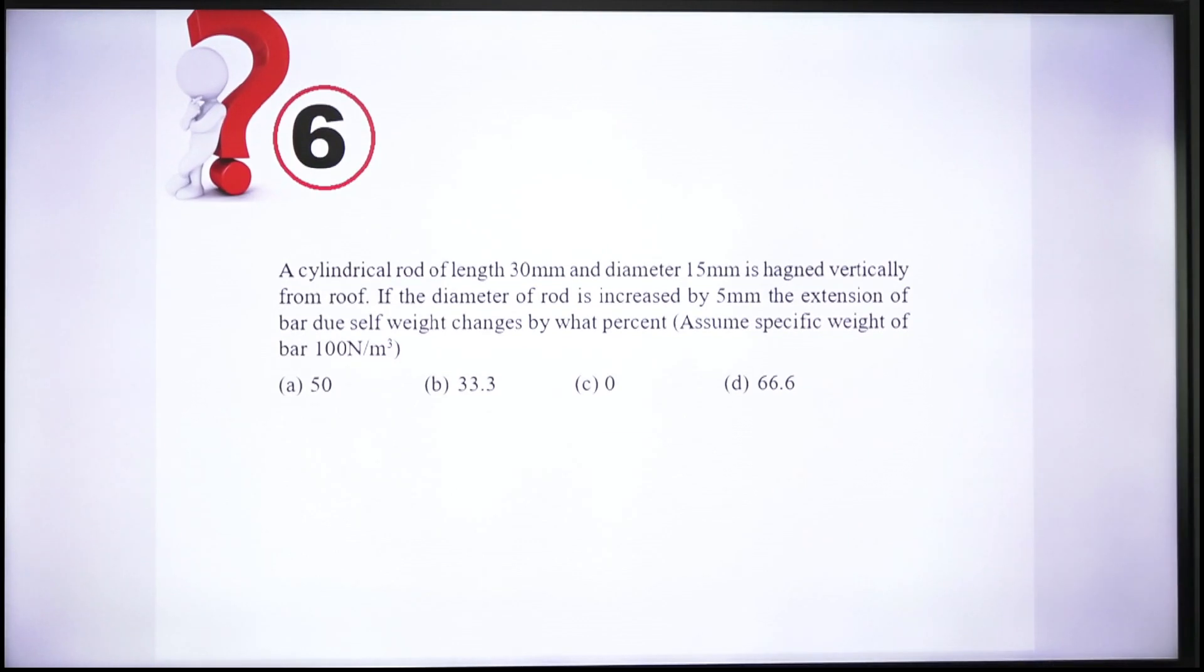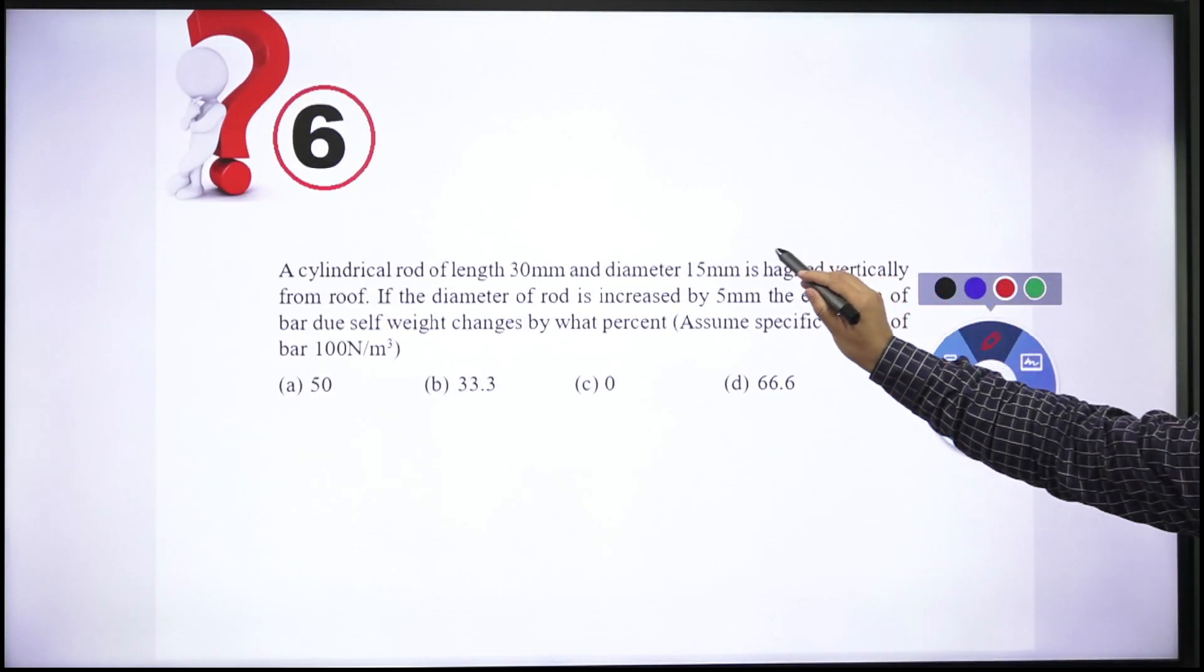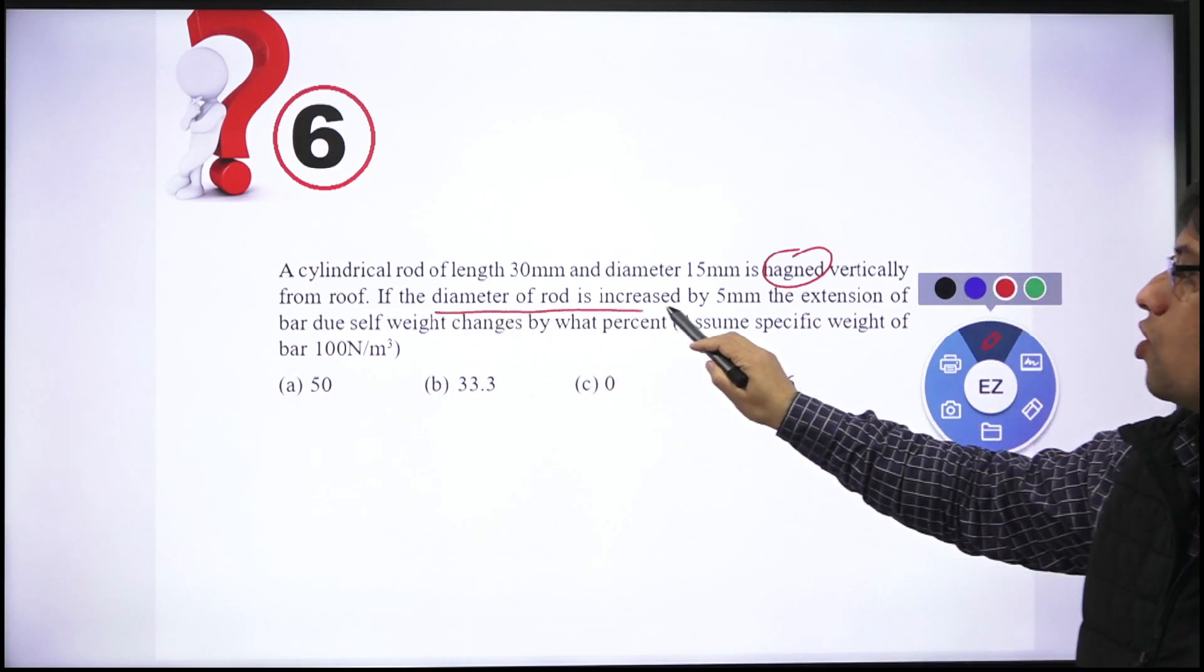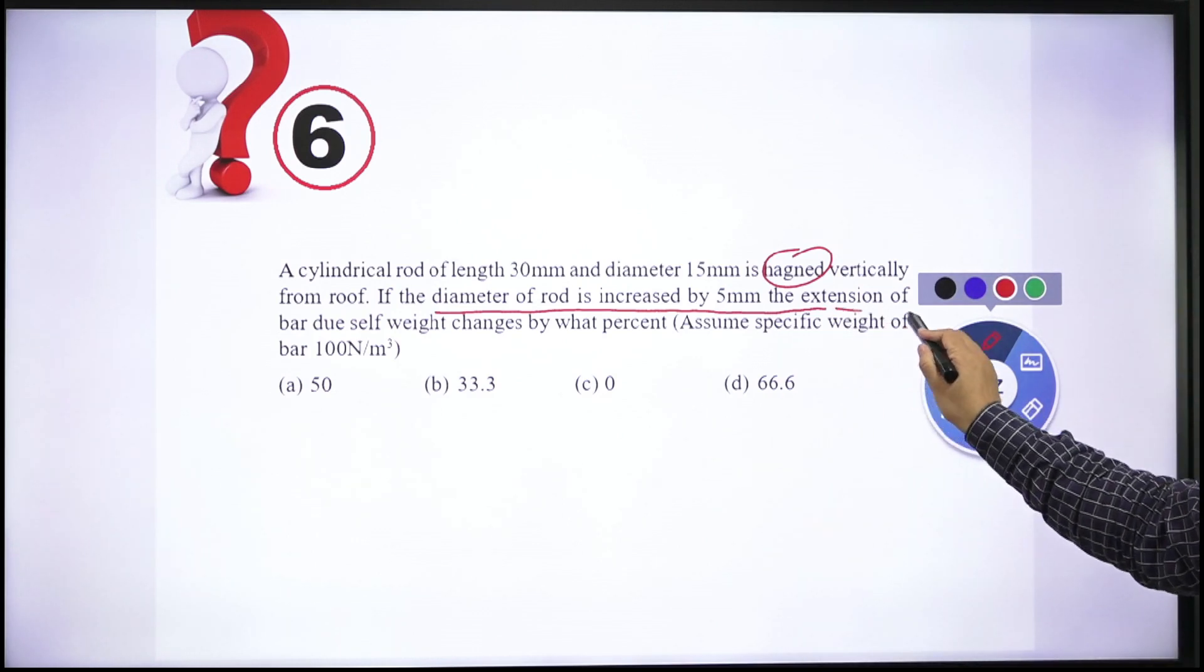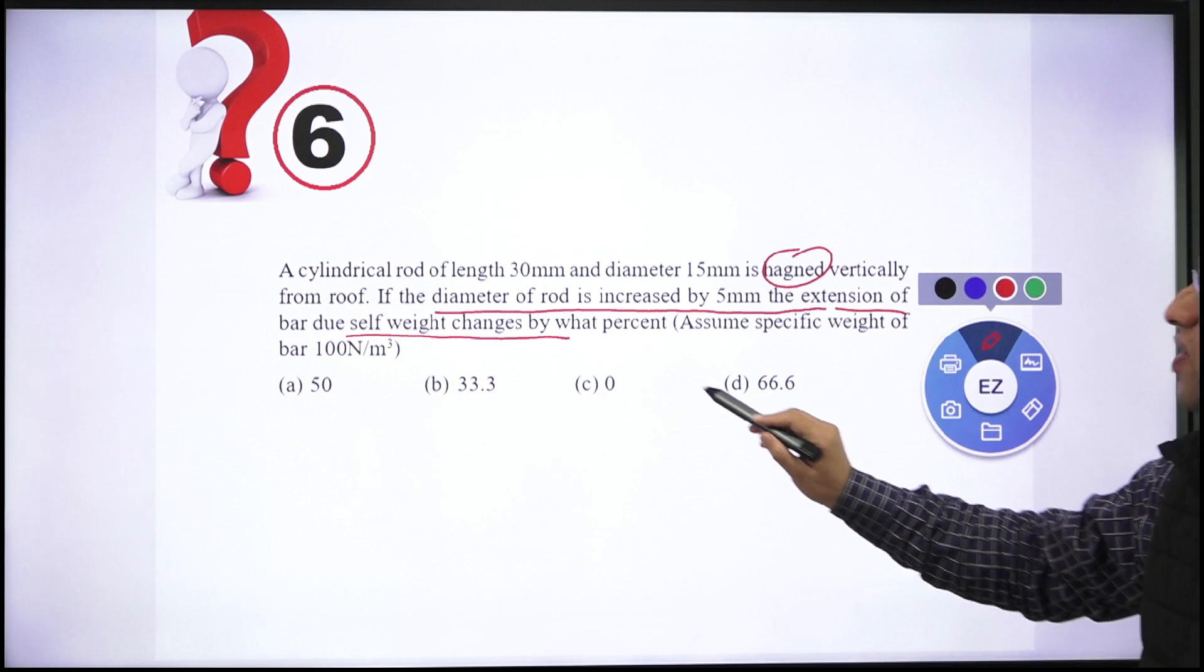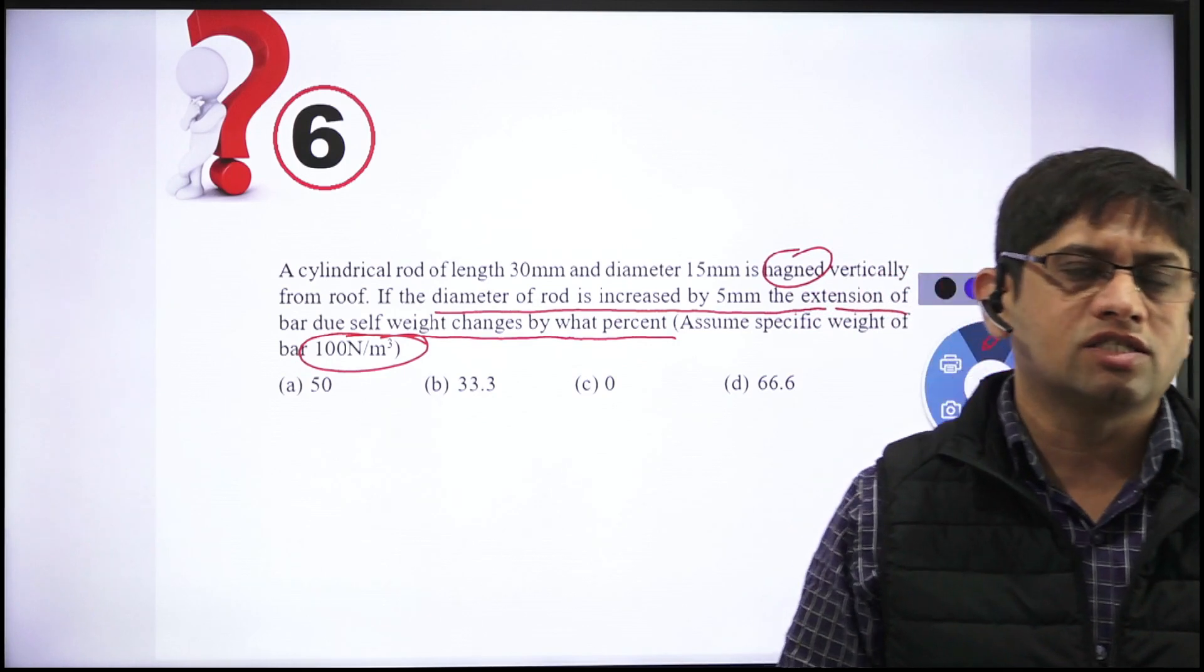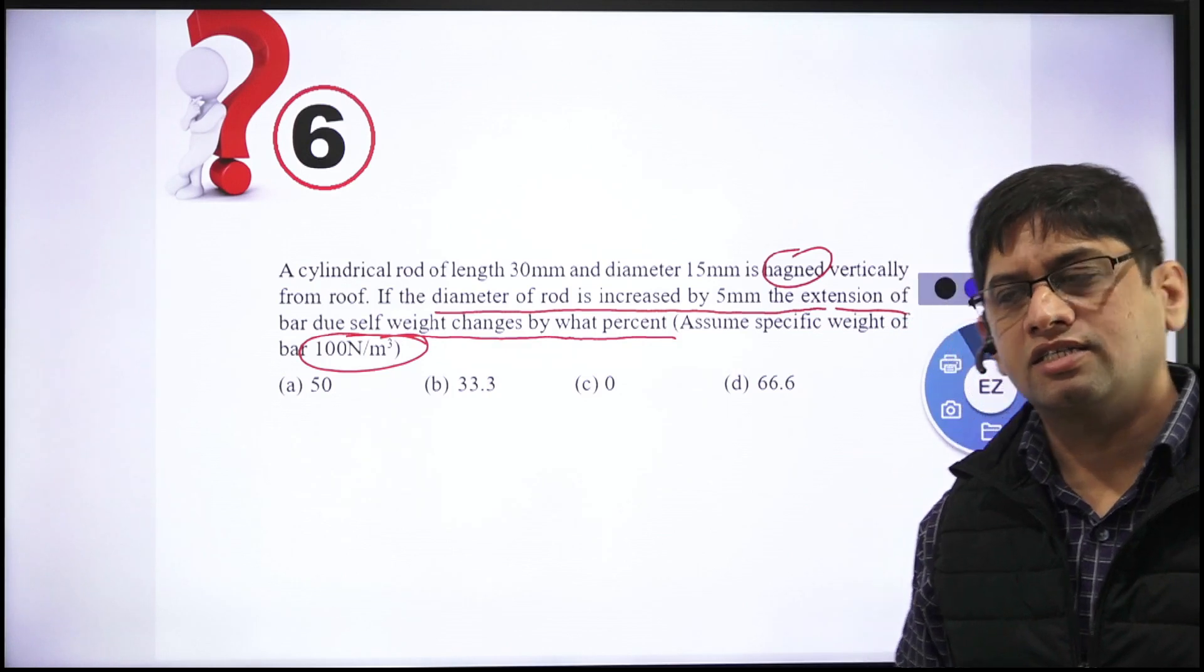Next question: A cylindrical rod of length 30 mm, diameter 15 mm, is hanging vertically from the roof. If the diameter of the rod increases by 5 mm, suppose you increase the diameter by 5 mm, the extension of the bar due to self-weight—there is a formula for that—extension of the bar due to self-weight will change by what percentage? Specific weight is given to us for the material of this bar.